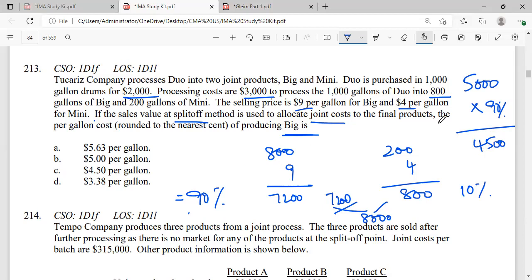Now $4,500 is a total cost but he is asking us per-gallon cost. How many gallons do we have for Big? We have 800 gallons. So 4,500 divided by 800, and that equals 5.625.